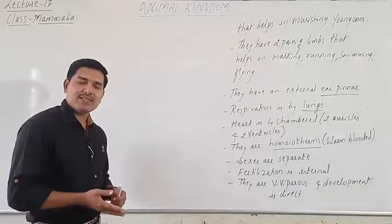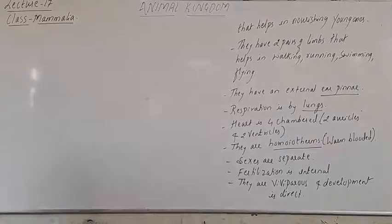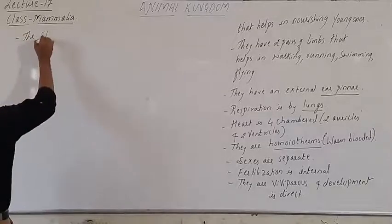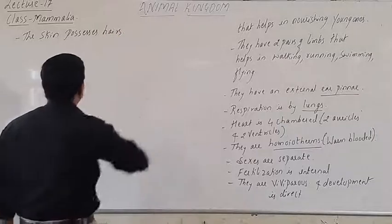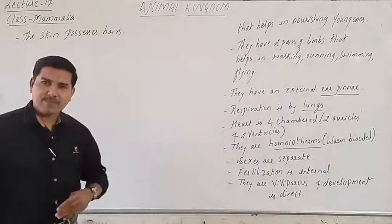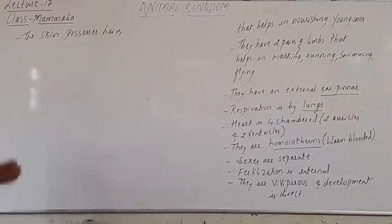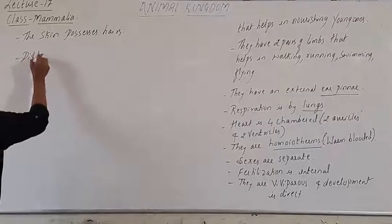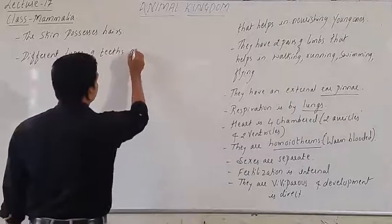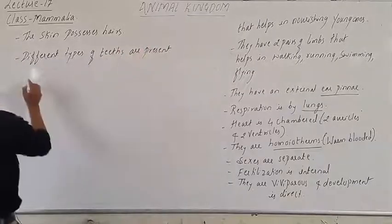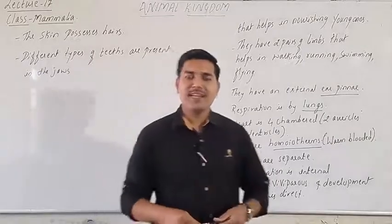The skin consists of hairs in the case of mammals — these mammals possess hairs, so the skin bears hairs. Along with hairs, another characteristic feature is that different types of teeth are present.